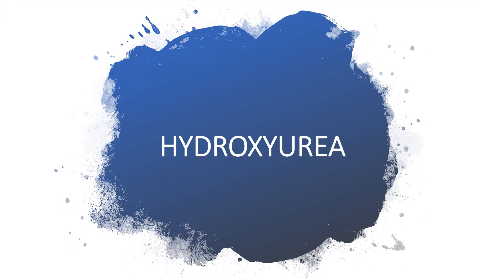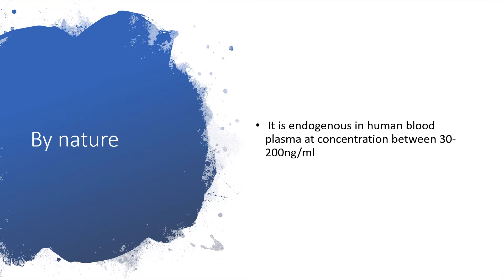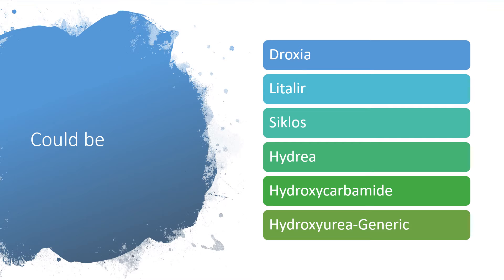Welcome to my channel. I'll be talking about hydroxyurea. Hydroxyurea, also called hydroxycarbamide, is a mono-hydroxy-substituted urea and an anti-metabolite. It is formed endogenously in human blood plasma at concentrations between 30 and 200 nanograms per mL. It comes under different brand names including Droxia, Letalia, Cyclose, Adria, hydroxycobamide, and hydroxyurea generally.